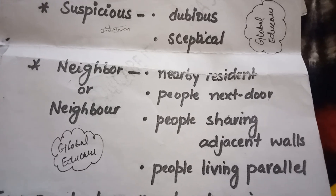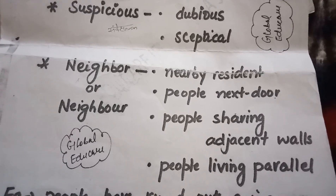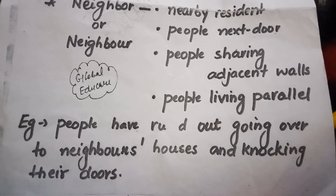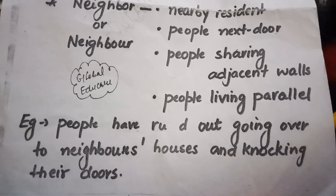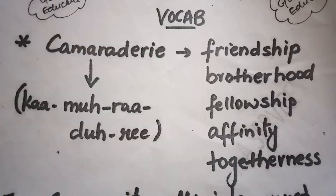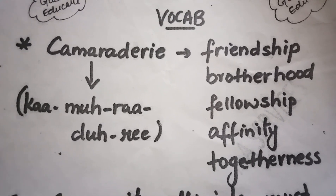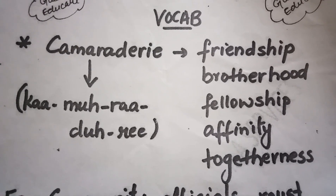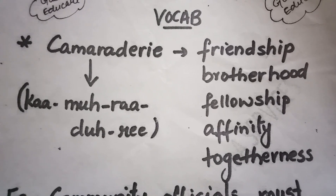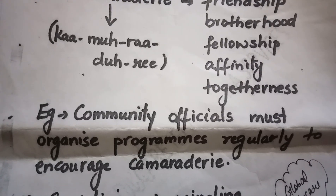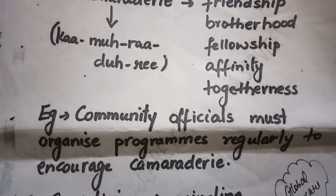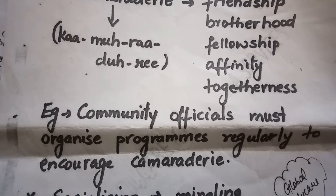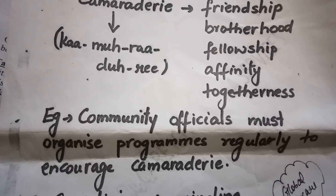For example: people have roots going over to their neighbors' houses and locking their doors. Next, 'camaraderie' — pronounced camaraderie — means friendship, brotherhood, fellowship, affinity, togetherness. For example: community officials must organize programs regularly to increase camaraderie, meaning friendship and brotherhood among residents.